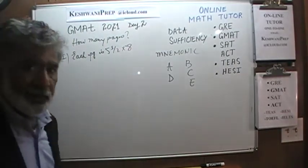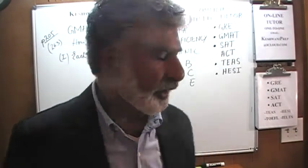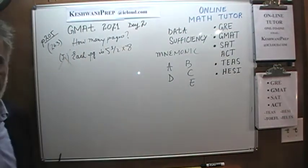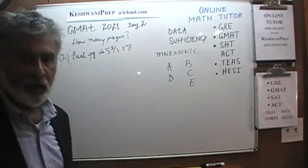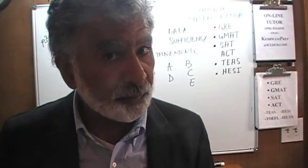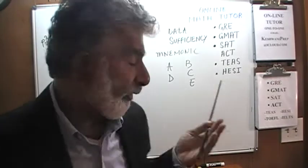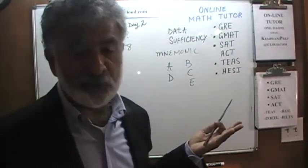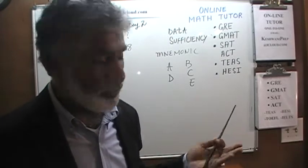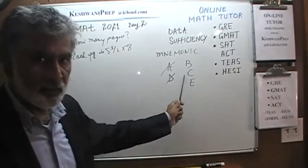Simply knowing that the size of each page is five and a half by eight, is that going to enable us to find out how many pages this book has? Obviously not. Our job is to tell them whether we have sufficient data to be able to answer the question. We don't actually have to solve the problem. Simply knowing the size of the page tells us nothing about how many pages the book has, which means the answer cannot be A or D. The answer is going to be either B, C, or E.